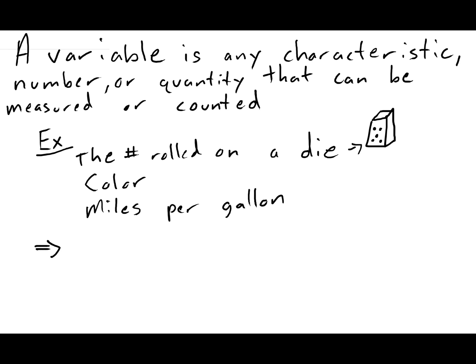Variables are not constant. Why are they called variables? Because they change. They're not the same. Every car doesn't have the same color. Every car doesn't have the same miles per gallon. And when you roll a dice, you don't get the same number every time. These are all measurable things that are changing. And so we call all these things variables.